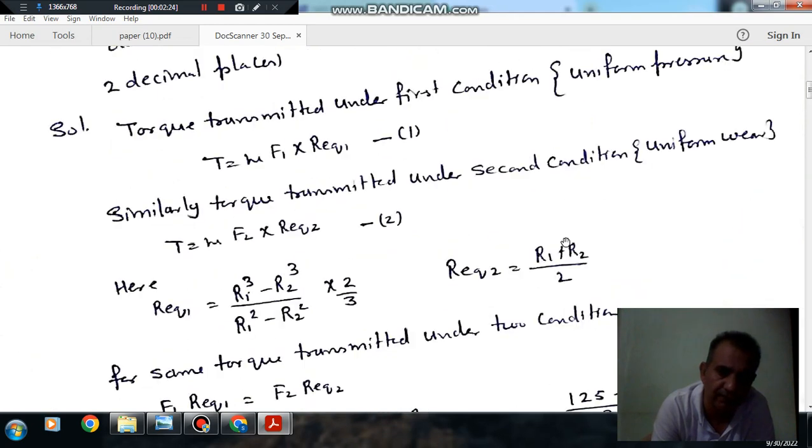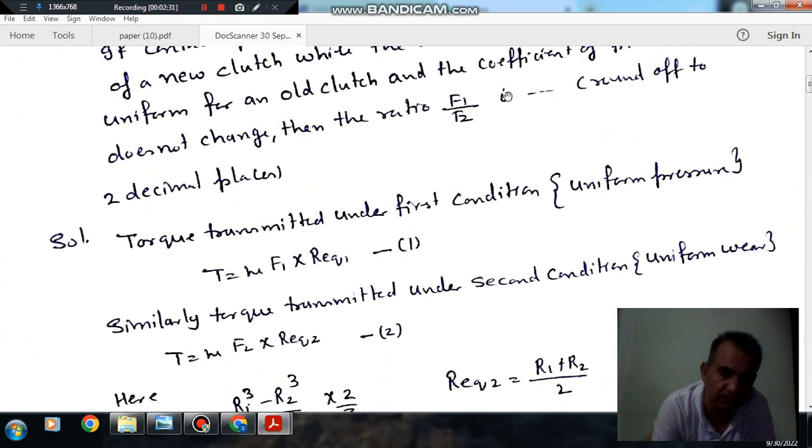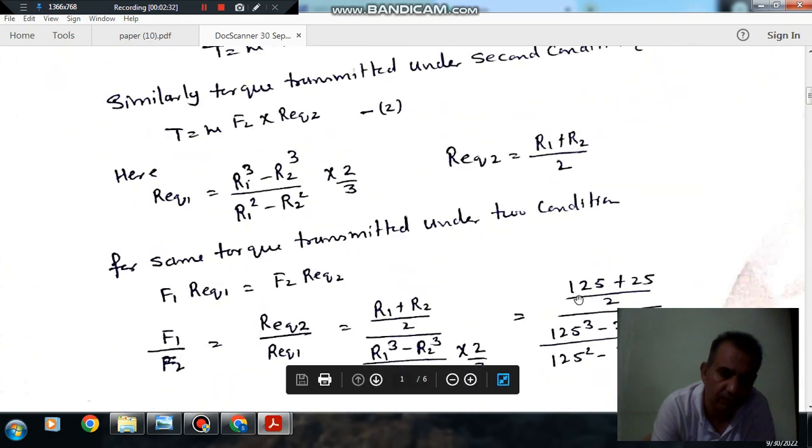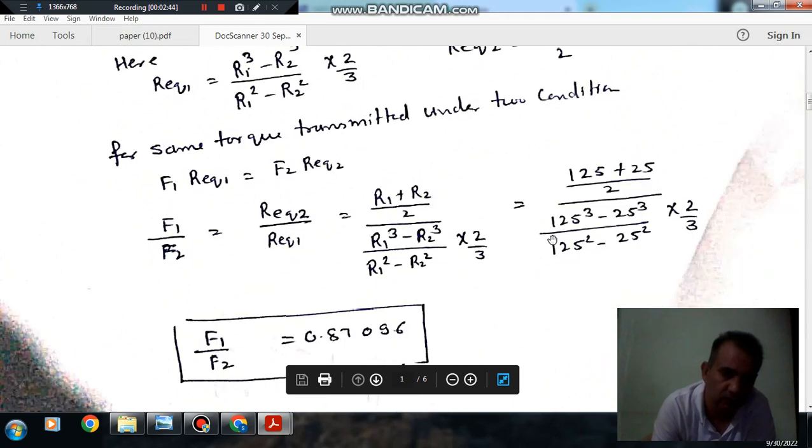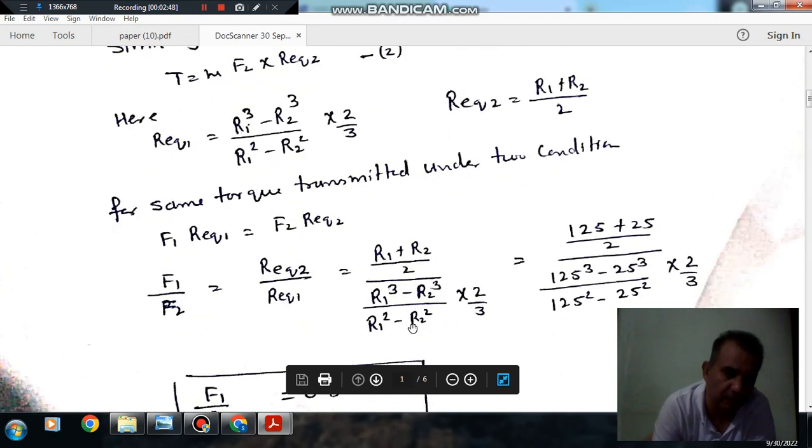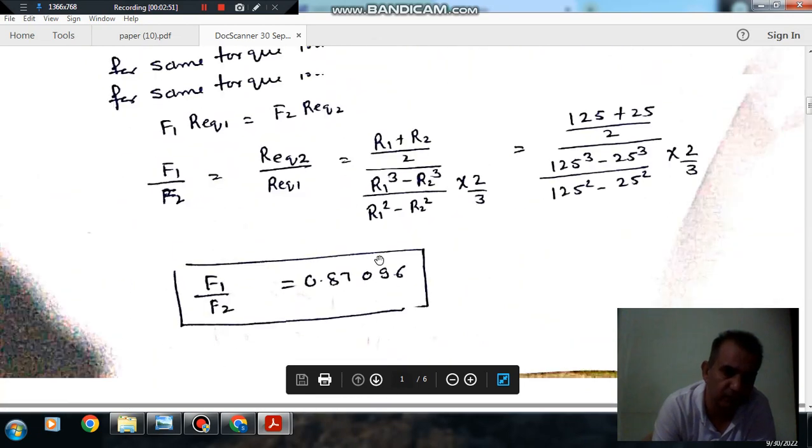R1 is given as 125mm and R2 is given as 25mm from the diameters. Substituting: (125 + 25)/2 divided by (125³ - 25³)/(125² - 25²) times 2. This comes out as 2.87095, or rounded to two decimal places, 2.87.